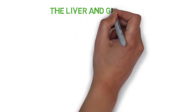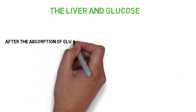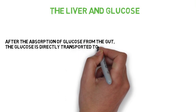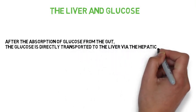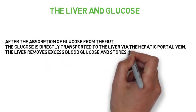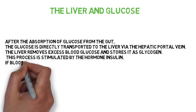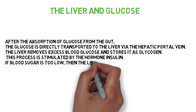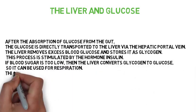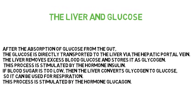The liver and glucose. After the absorption of glucose from the gut, glucose is directly transported to the liver via the hepatic portal vein. The liver removes excess blood glucose and stores it as glycogen; this process is stimulated by the hormone insulin. If blood sugar level is too low, the liver converts glycogen to glucose so it can be used for respiration.